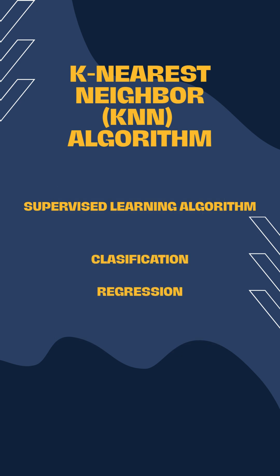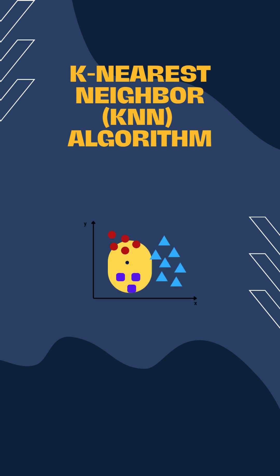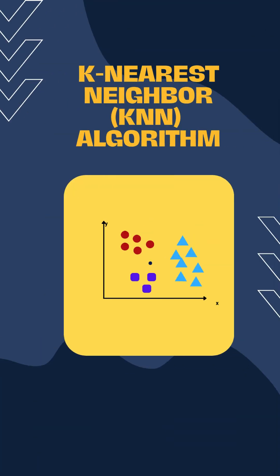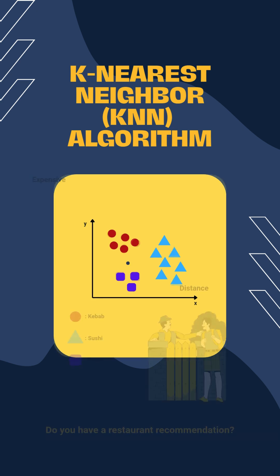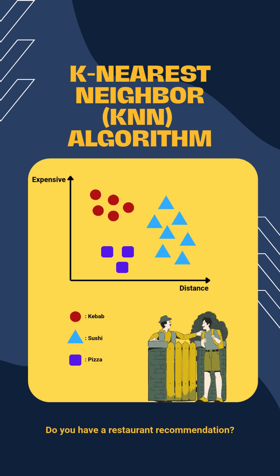Imagine you have a new data point and want to predict its label. KNN looks at the K-closest data points, like neighbors, and picks the most common class among them.